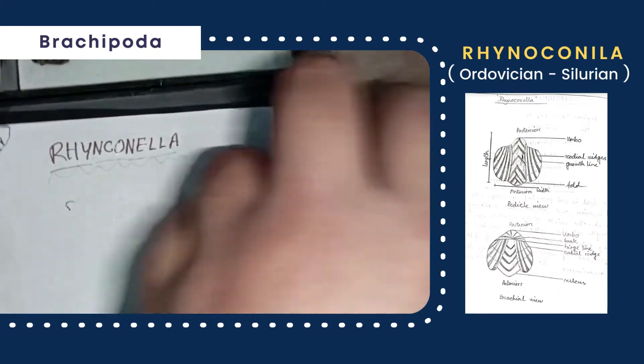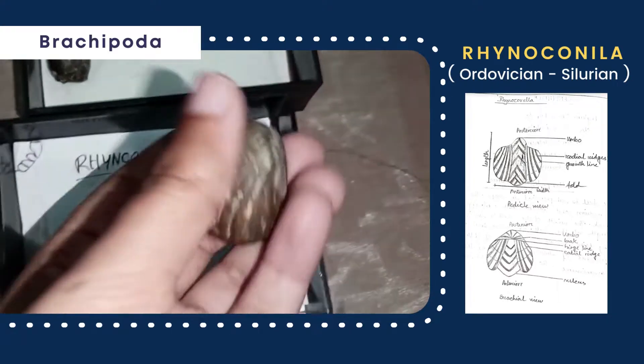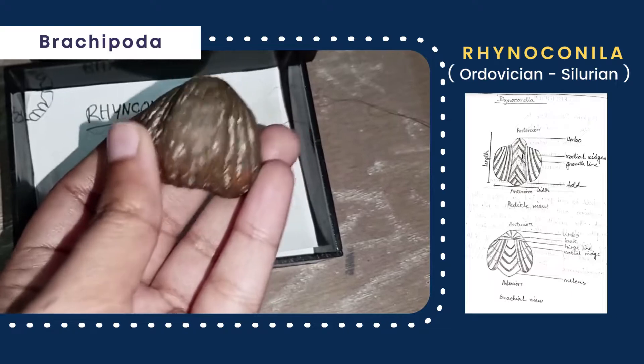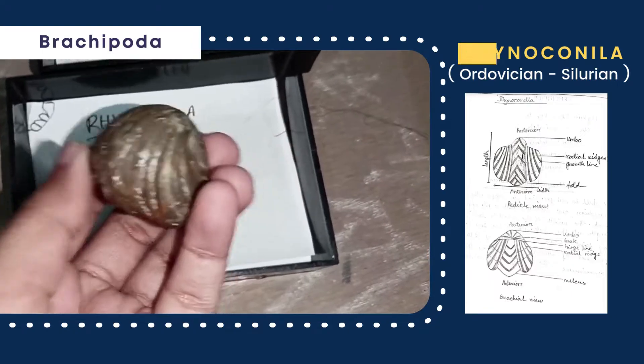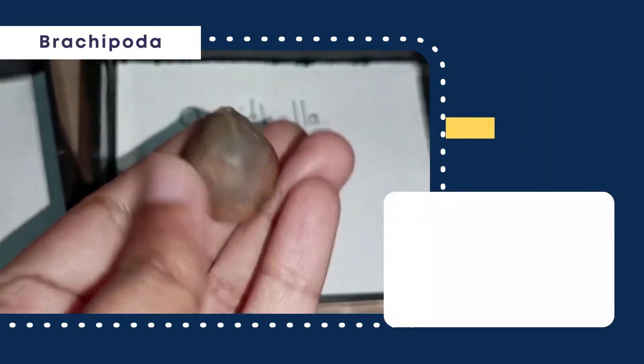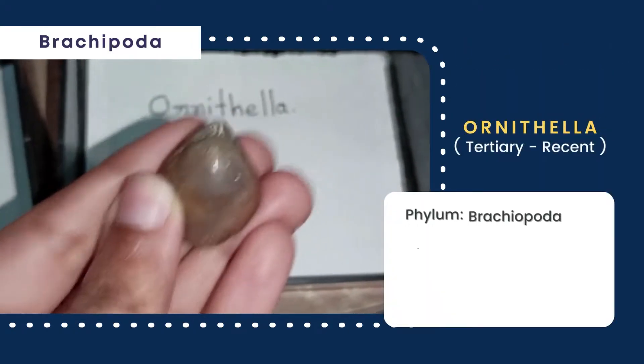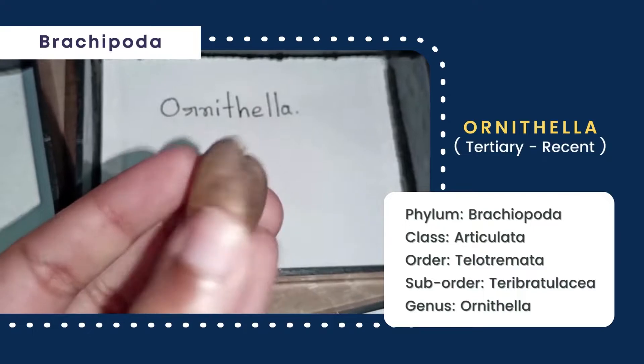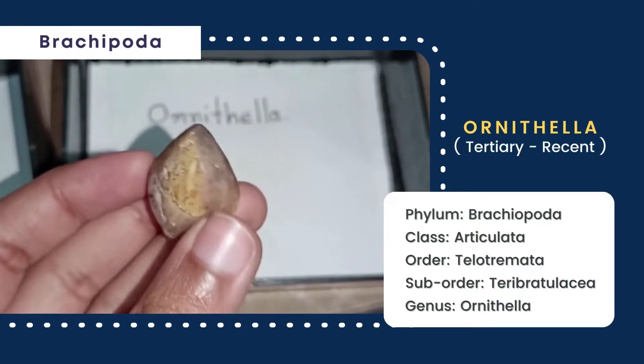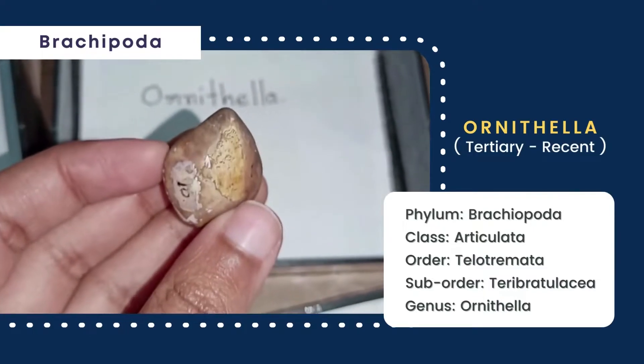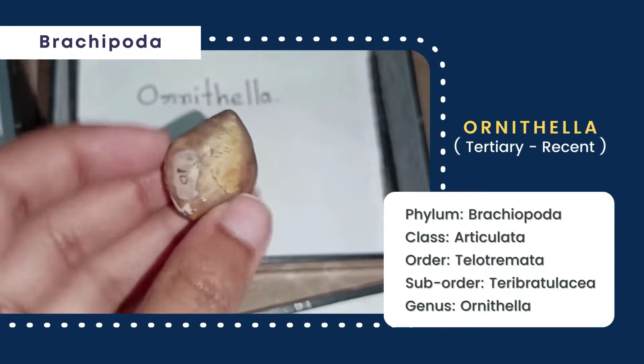The pedicle valve possesses a prominent fold and the brachial valve has a corresponding sulcus. The presence of two valves here confirms the presence of a commissure.